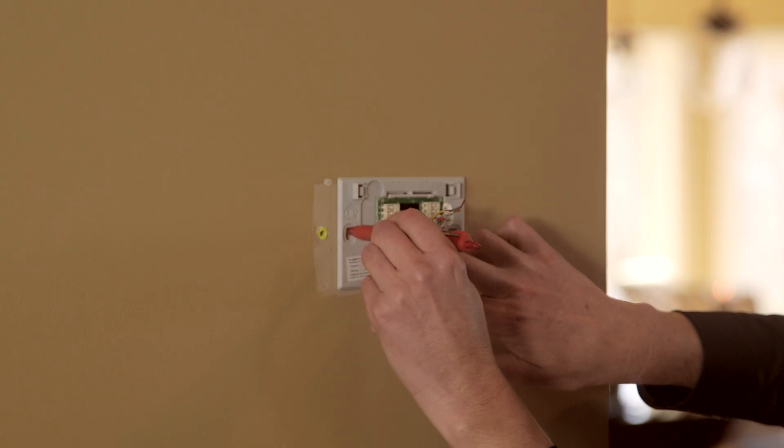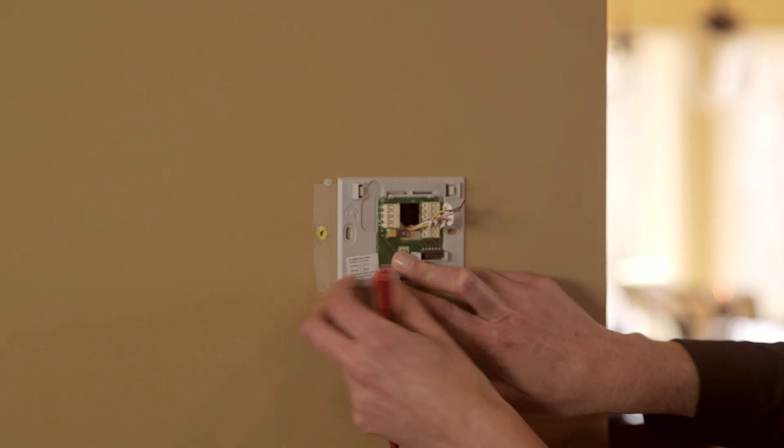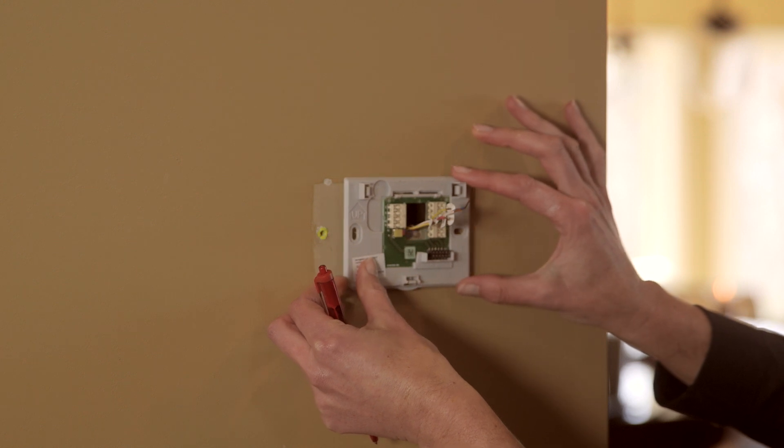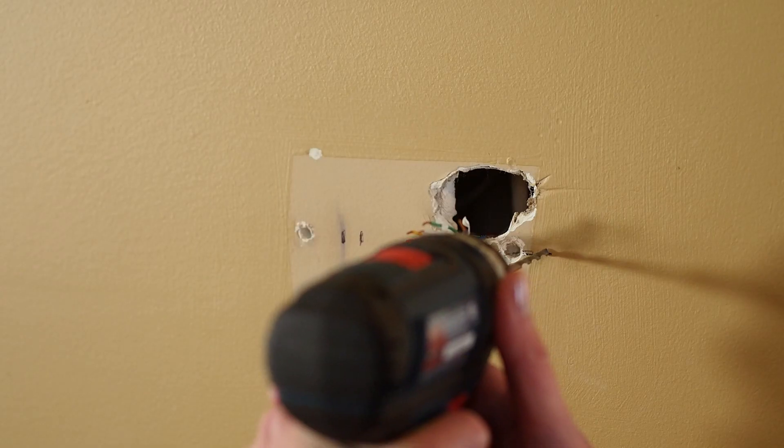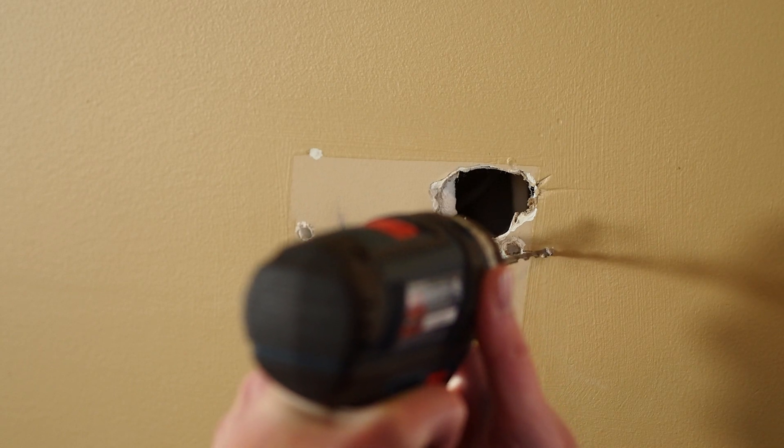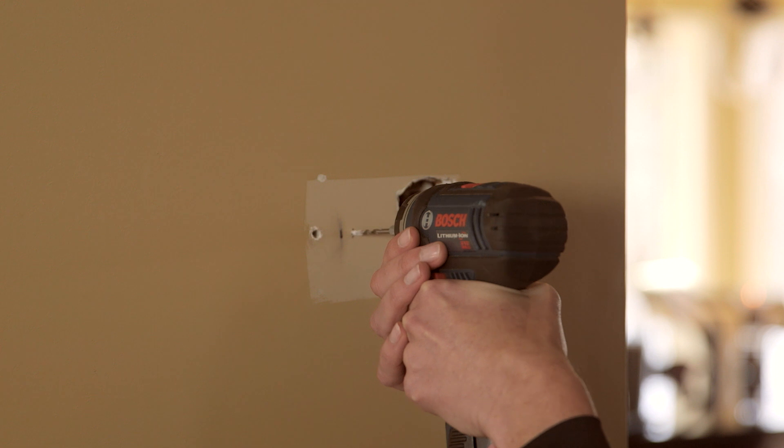Then, using a pen or pencil, mark the positions of both screw holes on the wall. If you don't already have holes in the areas you marked, you'll want to make pilot holes for the screws and anchors. If you're mounting the thermostat on drywall or plaster, use the drill bit indicated in your user guide.